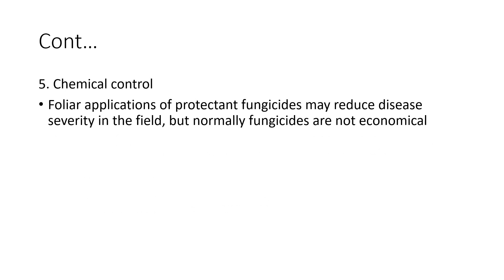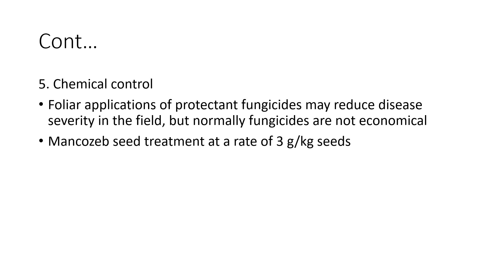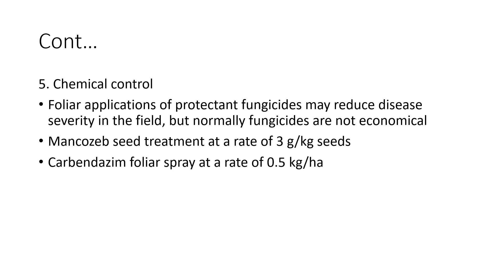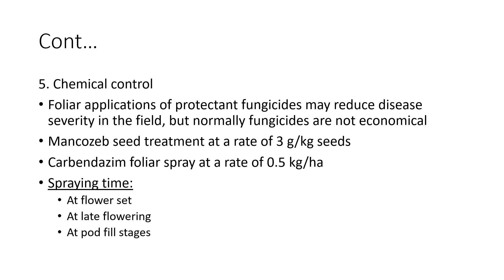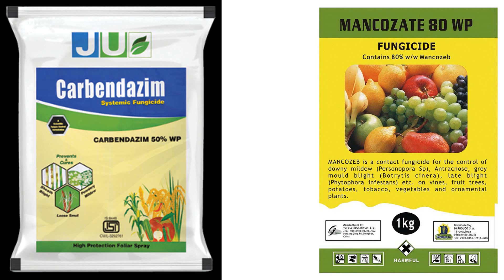Chemical control: Foliar application of fungicides may reduce the severity of the disease in the field. However, fungicides are not always economical, and the pathogen has various races or strains which can overcome the effects of fungicides. Mancozeb seed treatment at the rate of 3 grams per kg of seeds is recommended. Carbendazim foliar spray at the rate of 0.5 kg per hectare is also recommended. Spraying should be done at the right time — at the flowering stage, late flowering stage, and at the pod-filling stages.